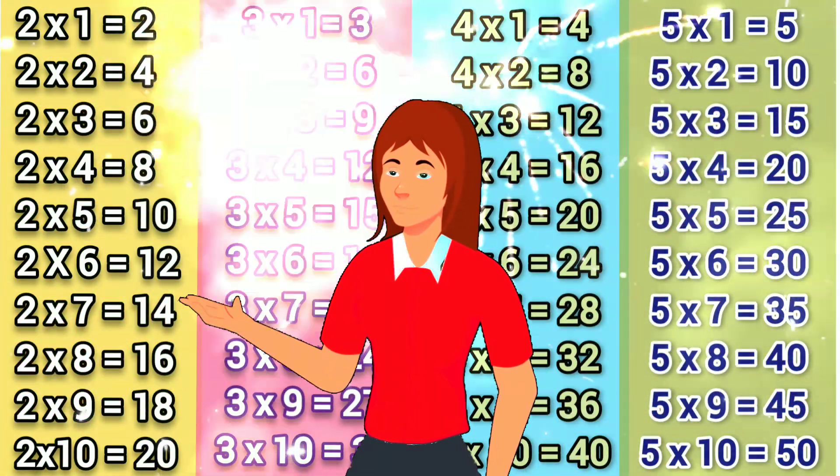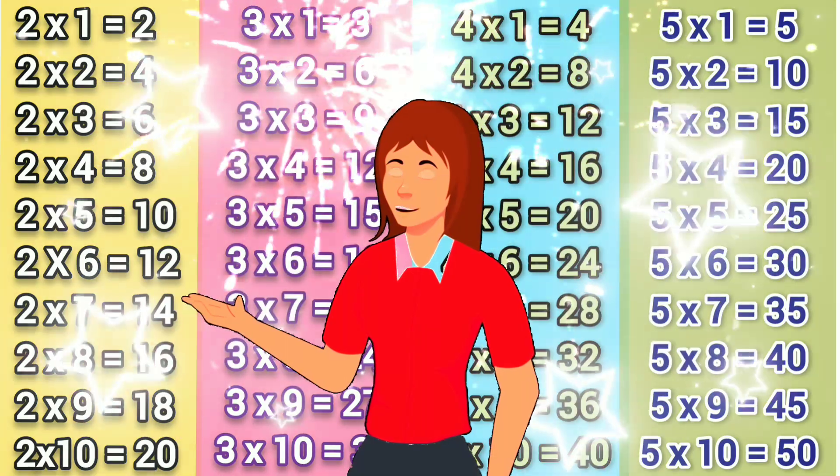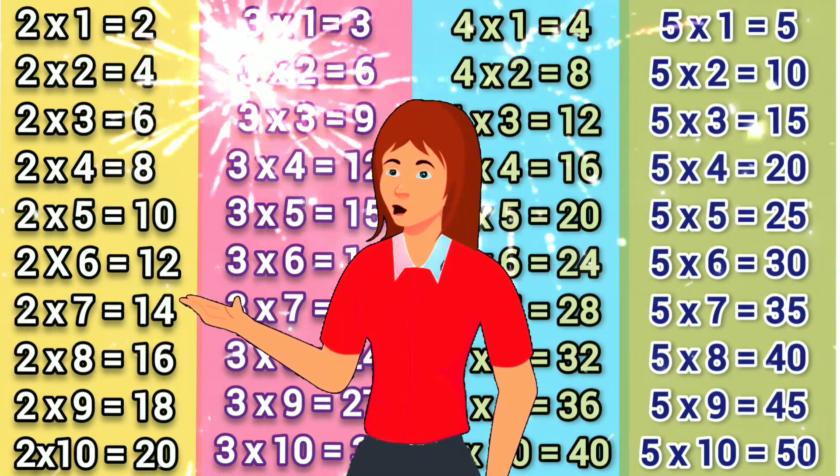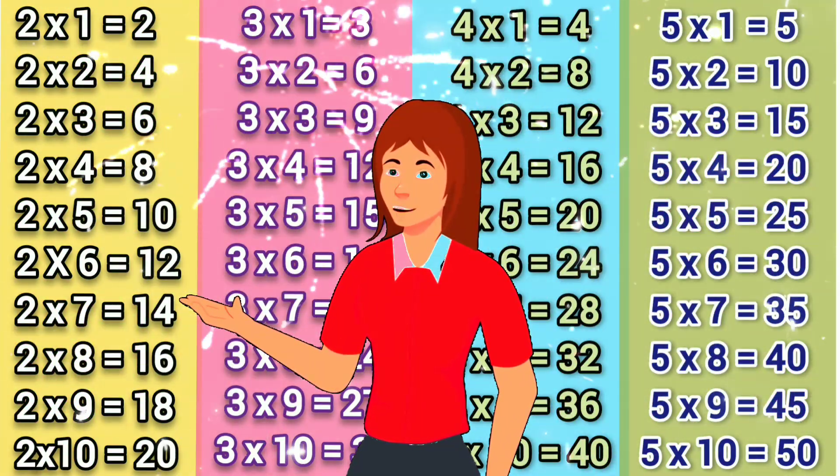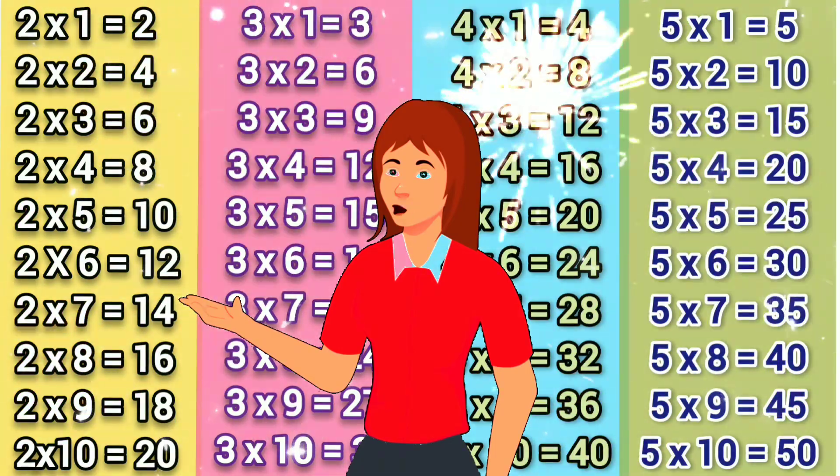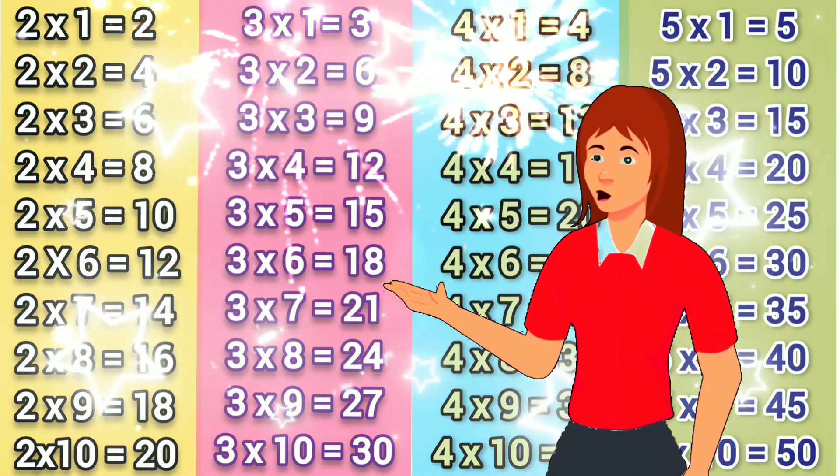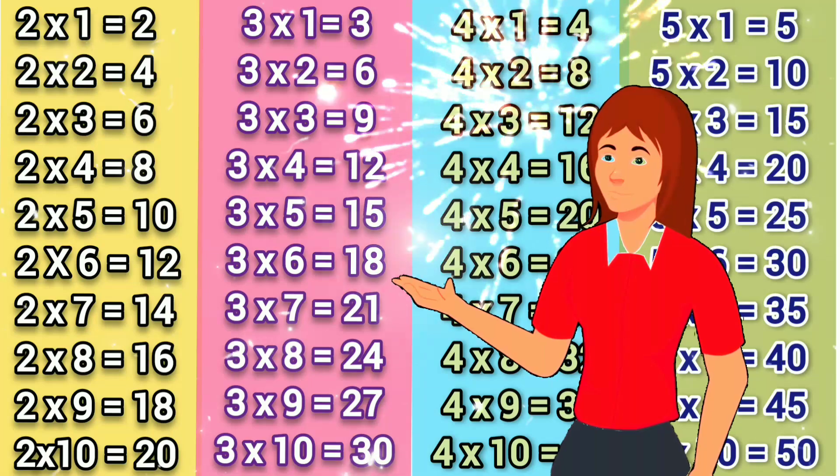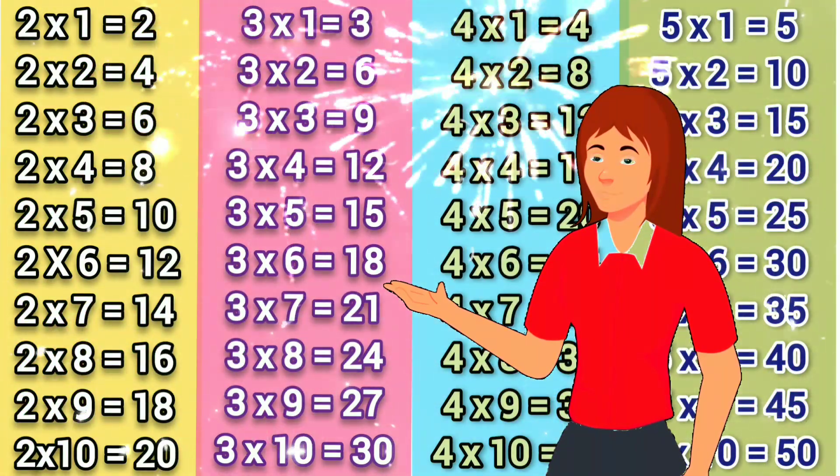3 1's are 3, 3 2's are 6, 3 3's are 9, 3 4's are 12, 3 5's are 15,